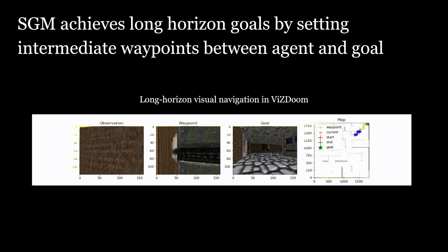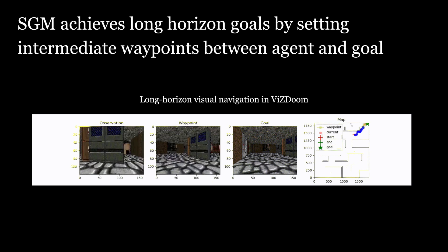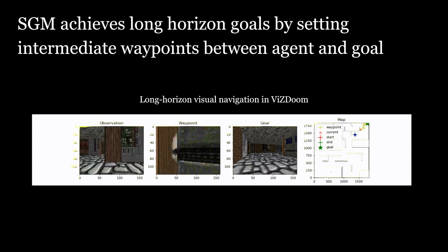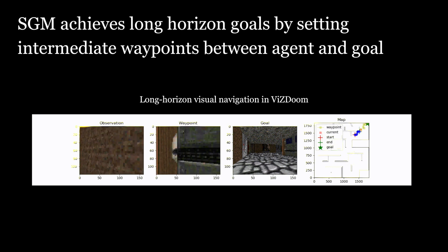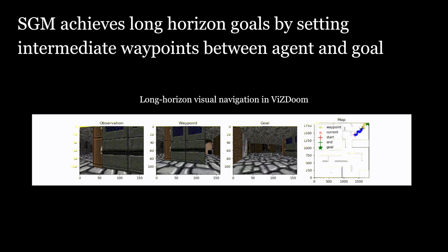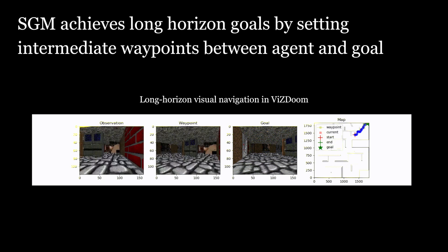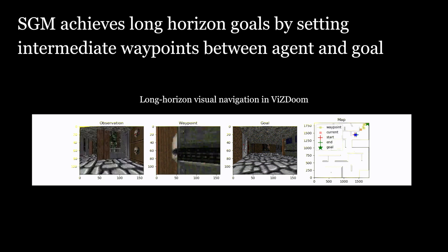In this video, the agent receives a sparse reward for reaching a far-away goal in a complex maze. Since the goal is far away, the agent follows a series of waypoints to achieve its final goal.